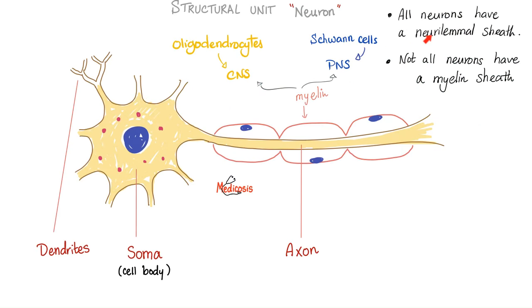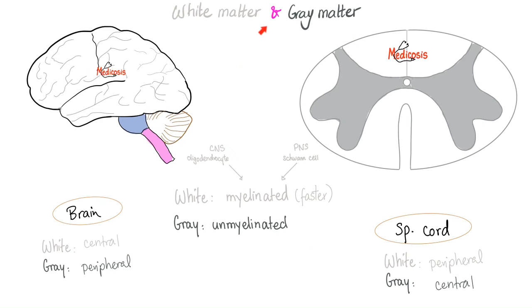Let's talk about your neurons. All neurons have a neurolemmal sheath, but not all neurons are myelinated. If you're talking about the CNS, your oligodendrocytes myelinate. In the peripheral nervous system, Schwann cells myelinate — oligodendrocytes from the neural tube, Schwann cells from the neural crest. Gray matter versus white matter: in the spinal cord, the gray matter is on the inside and white matter is on the outside. But in the brain, gray matter is on the outside and white matter is on the inside — vice versa.